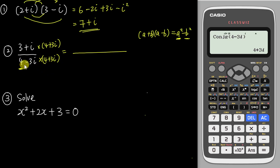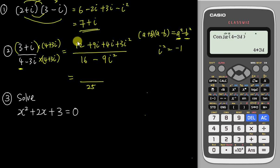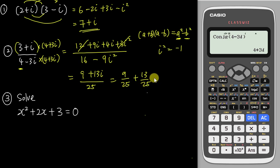For the denominator: (4 − 3i)(4 + 3i) = 4 squared minus (3i) squared = 16 minus 9i squared = 16 minus (9 times negative 1) = 25. For the numerator, expanding (3 + i)(4 + 3i): 3 times 4 is 12, 3 times 3i is 9i, i times 4 is 4i, and i times 3i is 3i squared which equals negative 3. So the real part is 12 minus 3 = 9, and the imaginary part is 9i + 4i = 13i.